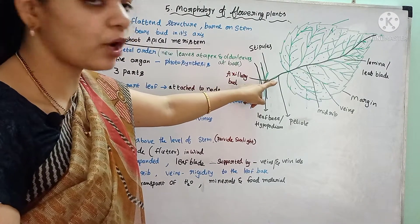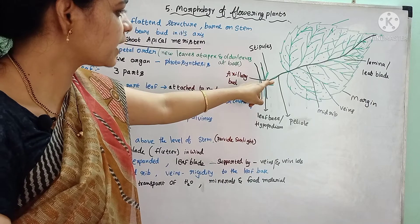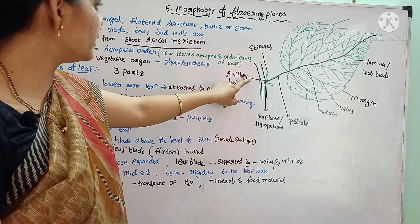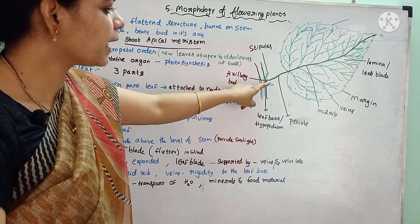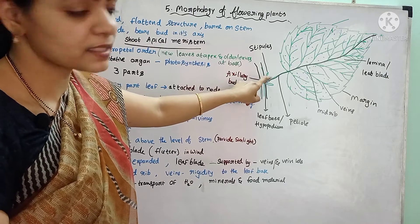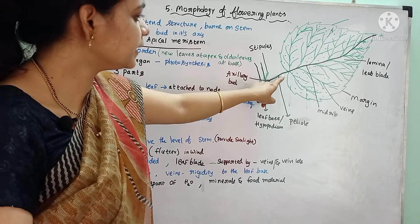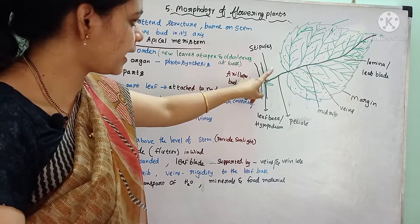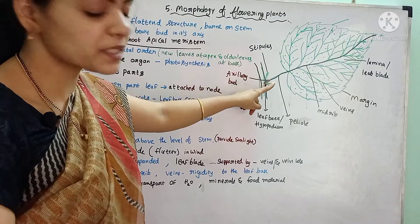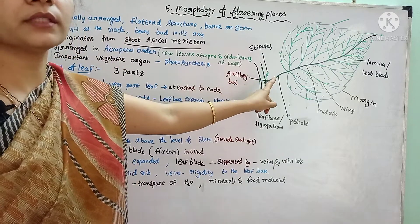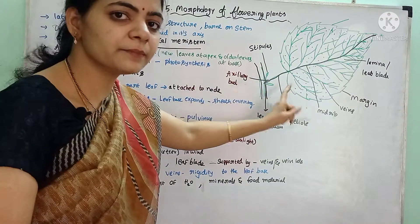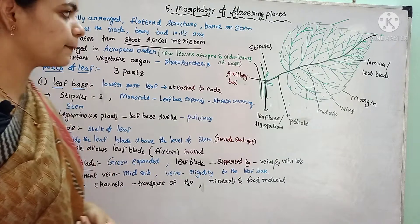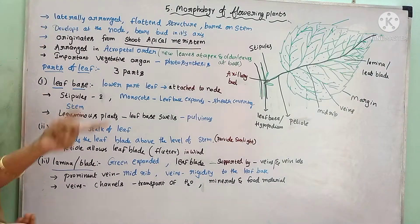We have already studied about types of buds — the axillary bud. Here, the leaf bears a bud in its axil, which is the region between the leaf and the upper part of the stem. In that axil region, the axillary bud is developed, which will go on to develop into a branch.